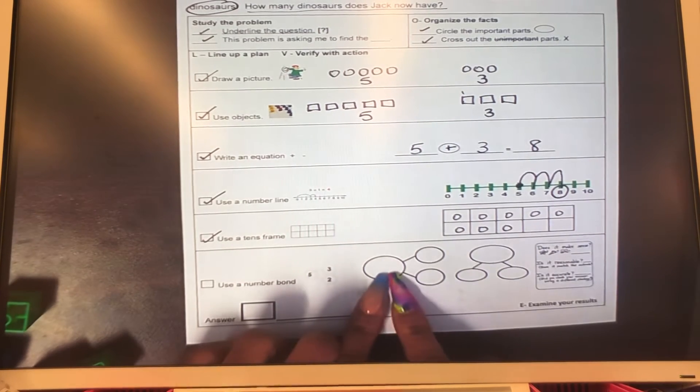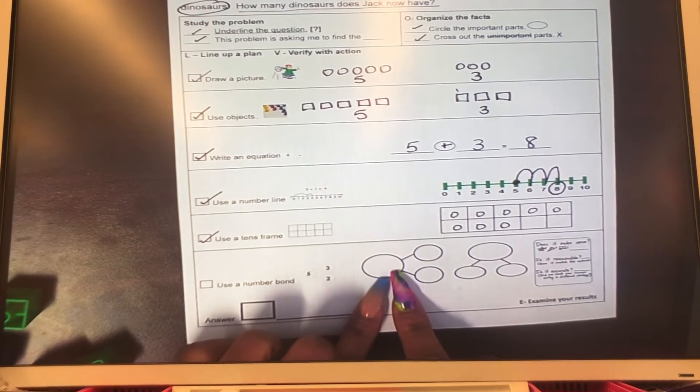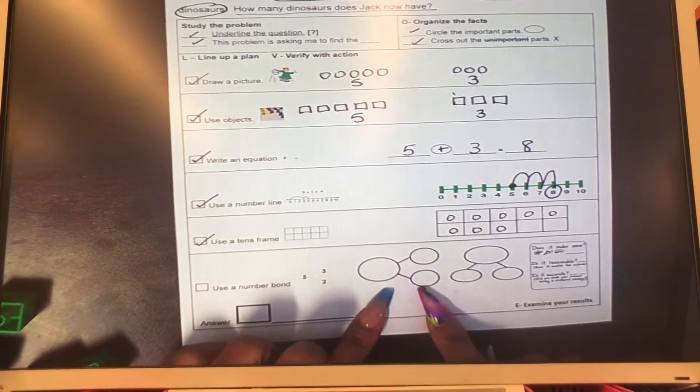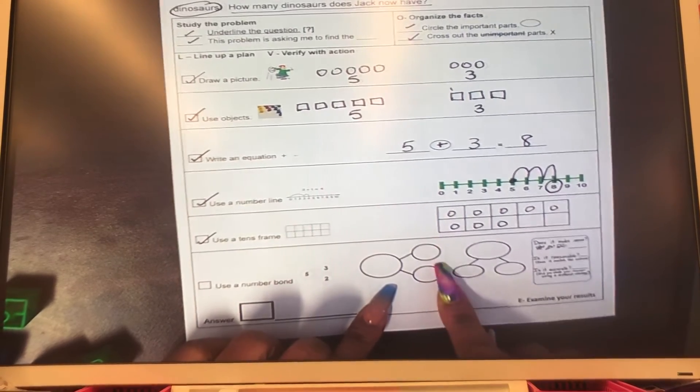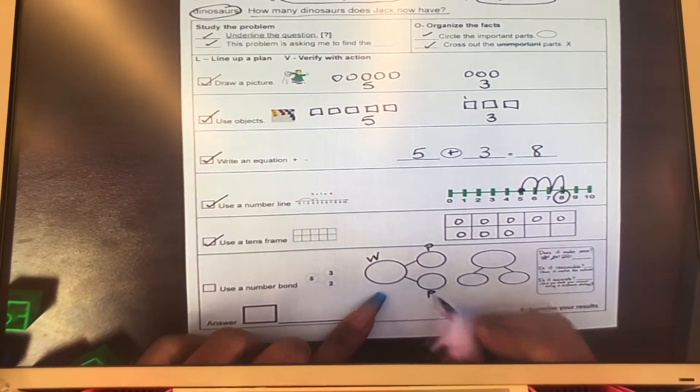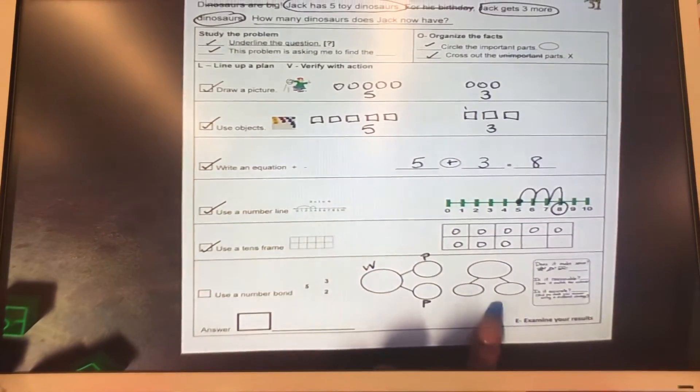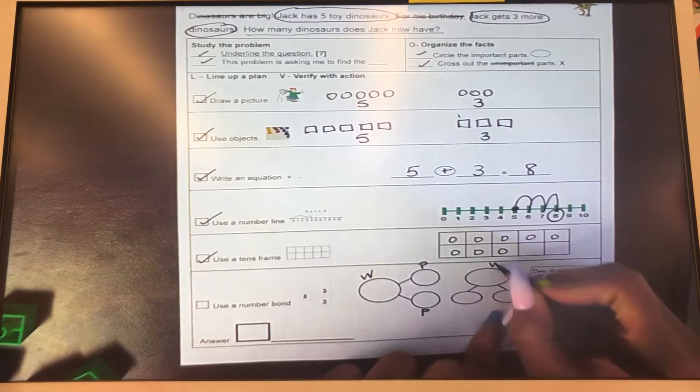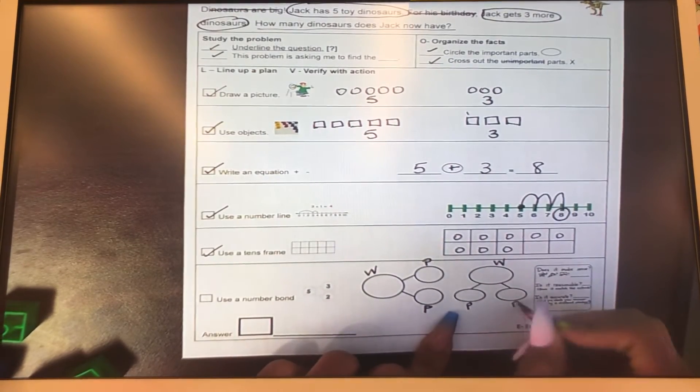So this one is the whole. And how do we know it's the whole? Because it has the two lines going to the parts. So let's label. Whole, part, and part. And let's do our second one. This is the whole, part, and part.